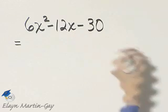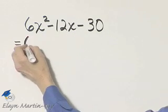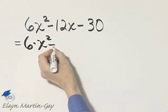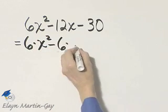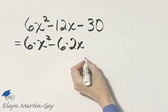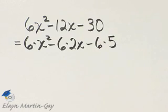I'll rewrite each of these terms showing that greatest common factor of 6. 6x squared is 6 times x squared minus 6 times what is 12x? Well, 6 times 2x is 12x minus 6 times 5 is 30.